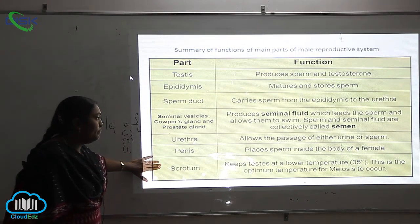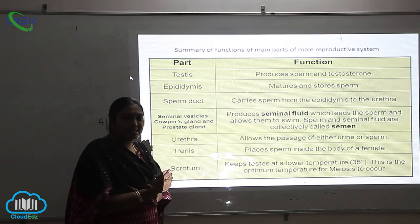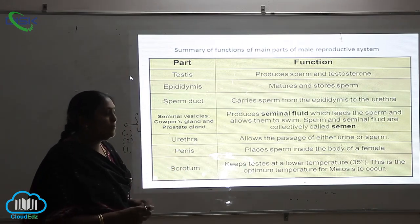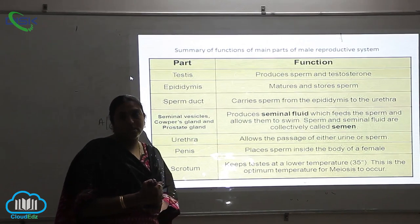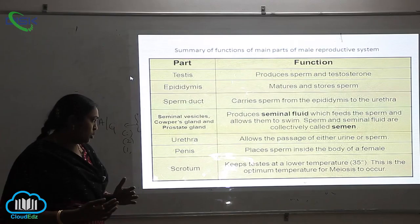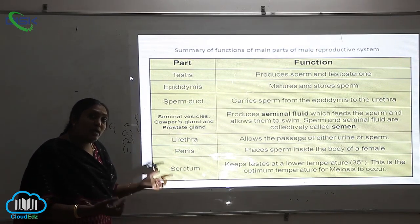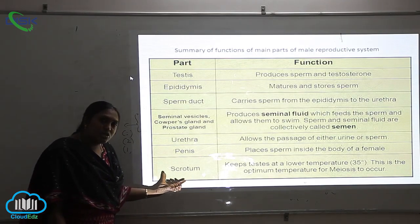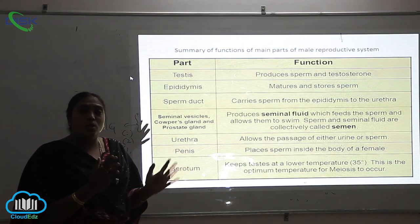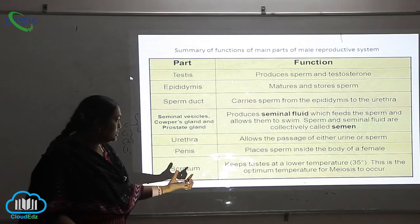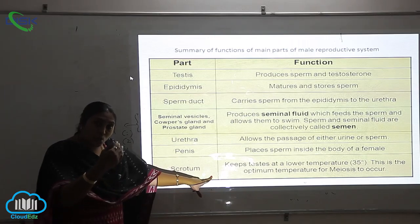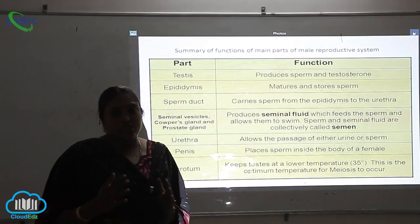The last part is the scrotum, which keeps the testis at a lower temperature — 35 degrees Celsius or 93 degrees Fahrenheit — the optimum temperature for meiosis to occur. During meiosis, division of cells takes place and different daughter cells are produced. In one word, the scrotum acts like a fridge, maintaining a cool temperature compared to outside the body, and also ensures that cytogenesis occurs.